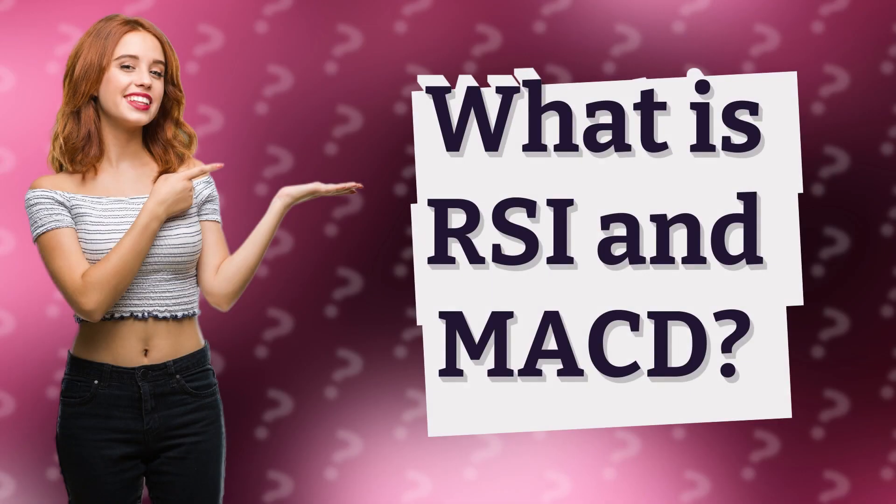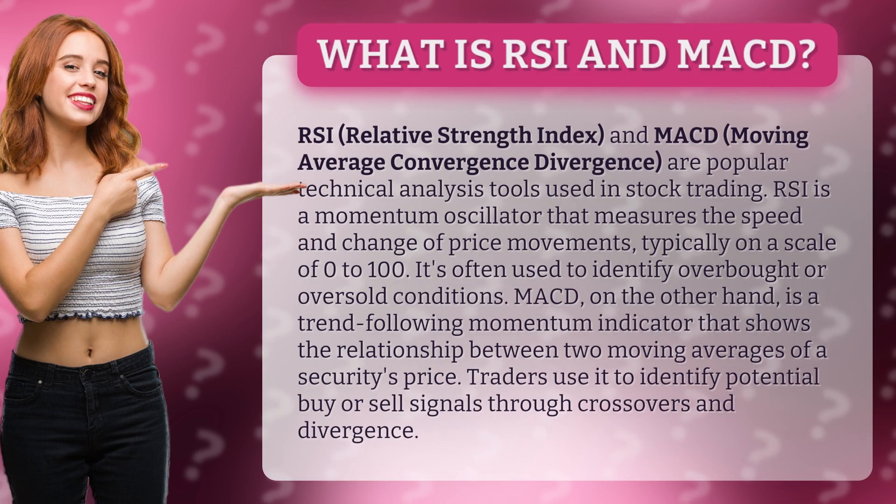What is RSI and MACD? RSI, relative strength index, and MACD, moving average convergence divergence, are popular technical analysis tools used in stock trading. RSI is a momentum oscillator that measures the speed and change of price movements, typically on a scale of 0 to 100.